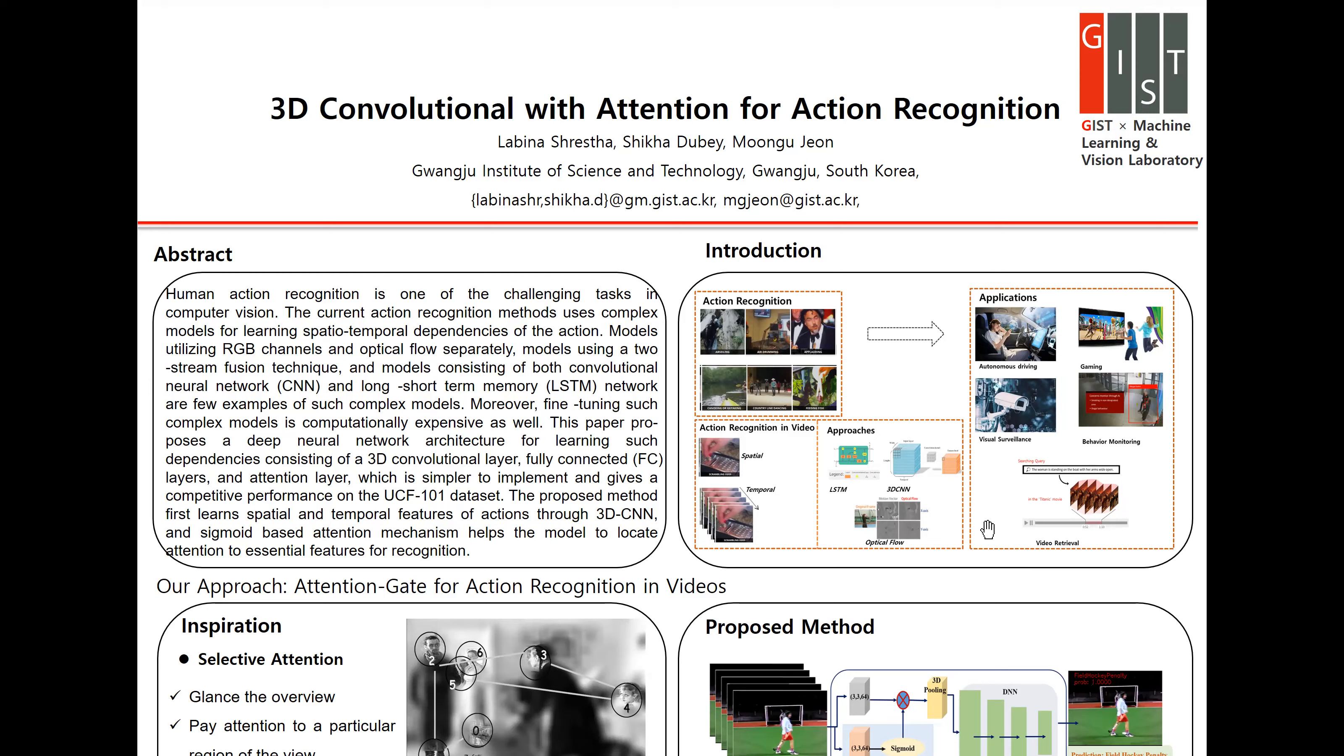Most of the action recognition methods mainly use a two-stream option like 2D CNN for spatial information and LSTM or optical flow to capture temporary information. This method has certain drawbacks as it is expensive and complex to build as they need extra stream or parameters to increase the performance.